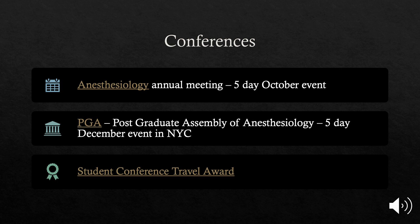For conferences, the two largest anesthesiology meetings each year are worth knowing about. The ASA Anesthesiology meeting is a five-day event in October at various locations — last year in Orlando, and in 2020 it will be in Washington DC — with over 14,000 anesthesia providers attending. The PGA is the second largest anesthesia conference, held every December in New York City. If you're interested in attending, apply for the Student Conference Travel Award through the MSA, which can help cover flights and hotels.